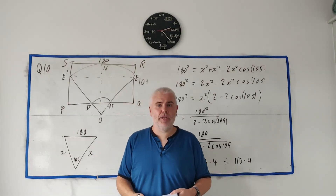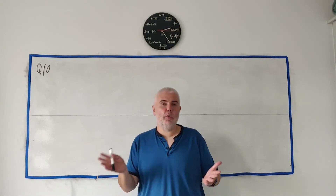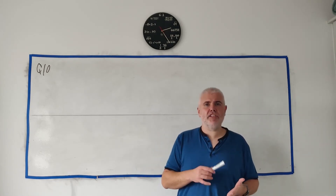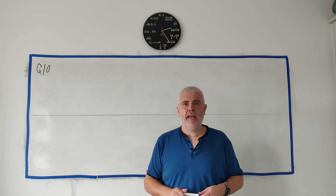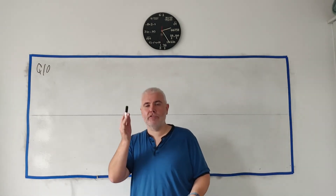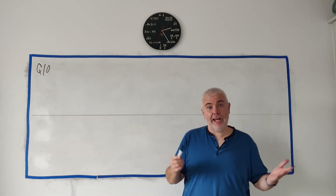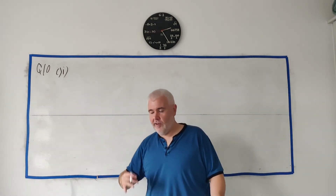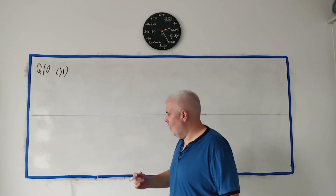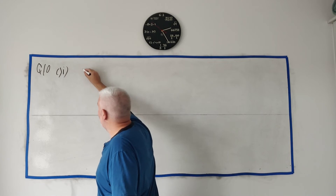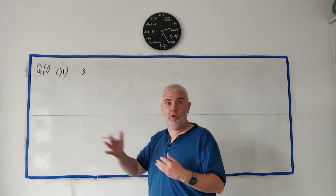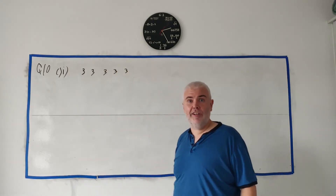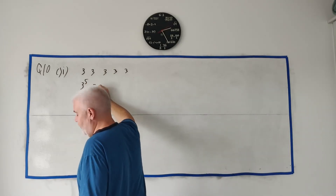Part C moves on to traffic lights. Mattie passes five sets of traffic lights, each can be red, green, or orange. Part C1 asks how many different patterns are possible. Each light independently has 3 options, so the total is 3 × 3 × 3 × 3 × 3 = 3⁵ = 243.